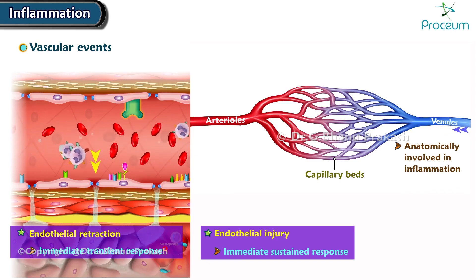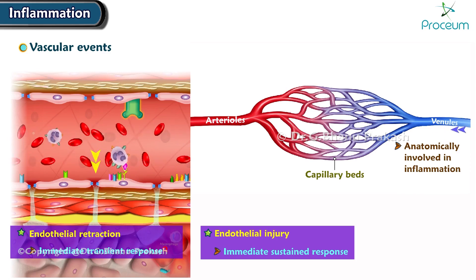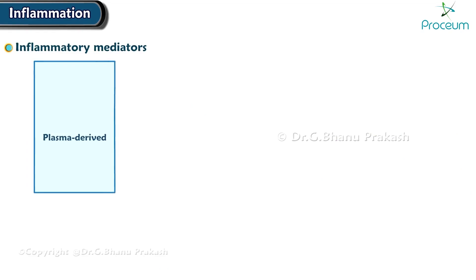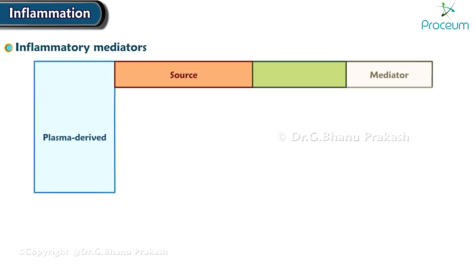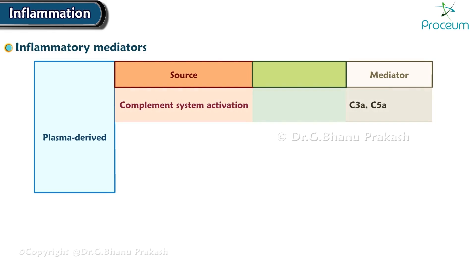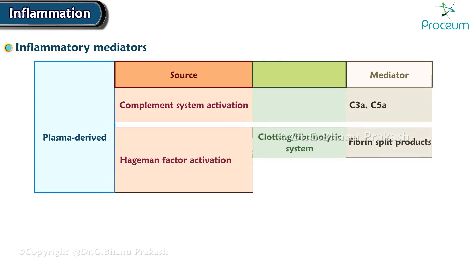This involves the emigration of leukocytes, and their accumulation and activation at the site of injury. This phenomenon also involves plasma-derived inflammatory mediator sources, such as complement system activation giving rise to C3a and C5a mediators, and Hageman factors activating the clotting system, which gives rise to fibrin split products, and the kinin system giving rise to kinins such as bradykinin.